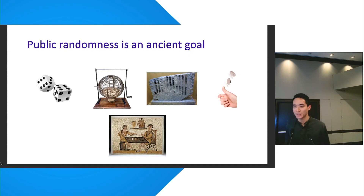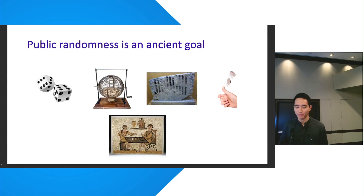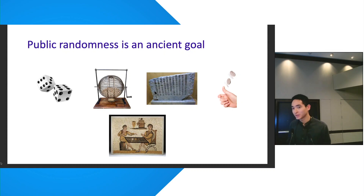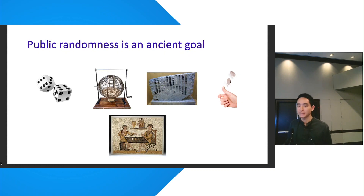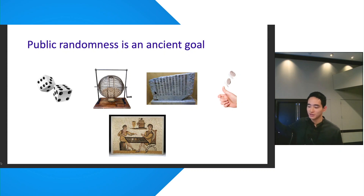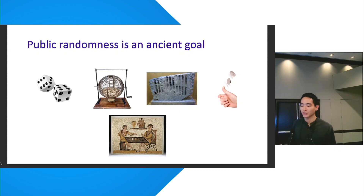Let's say we have a network of mutually untrusting parties and we're trying to jointly source a publicly random value for the sake of a lottery or so. This theme of public randomness is an ancient goal, and we've utilized ancient tools to realize it — even a rock-looking thing called a kleroterion, which people in Athens used to elect public officials.